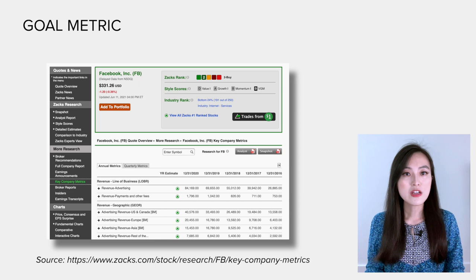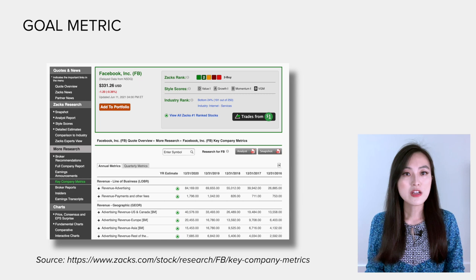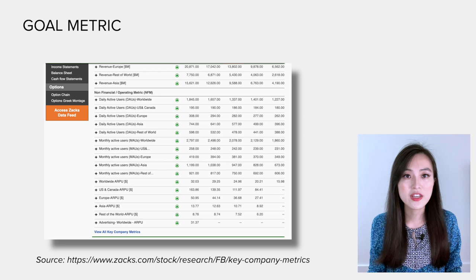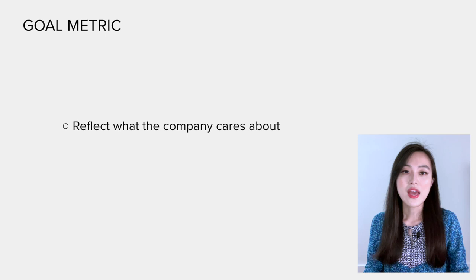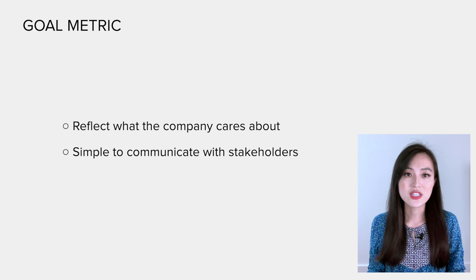Let me give you an example. Facebook's mission is to give people the power to build a community and bring the world closer together. And its goal metrics include advertising revenue, daily active users, and monthly active users. While the transformation from its mission to its goal metrics, the goal metrics do reflect what the companies ultimately care about and they are simple enough to be easily communicated to different stakeholders such as investors, customers, and employees.